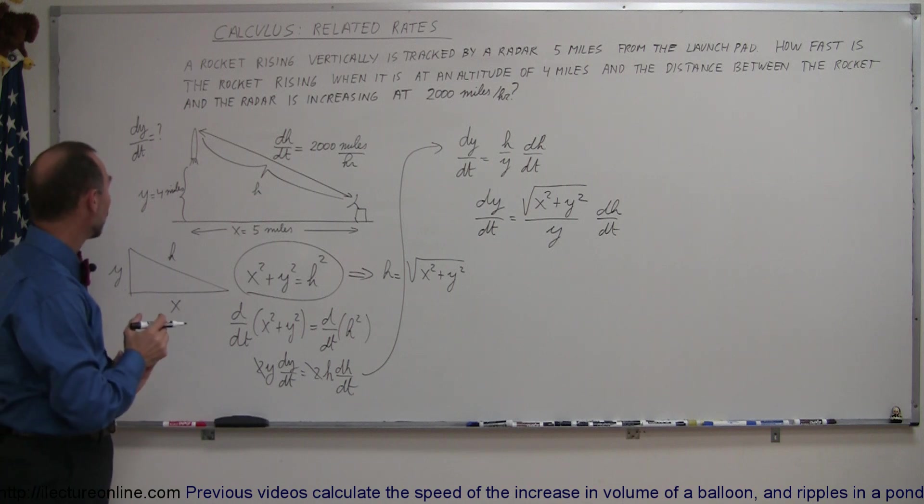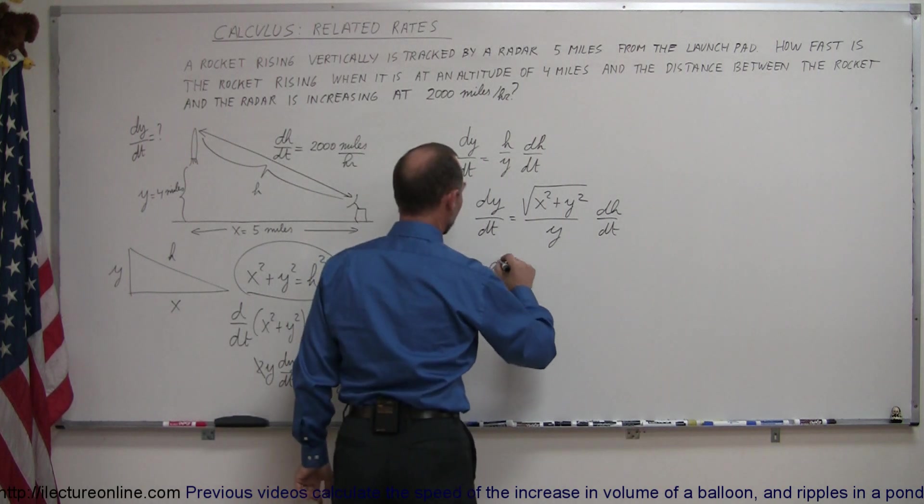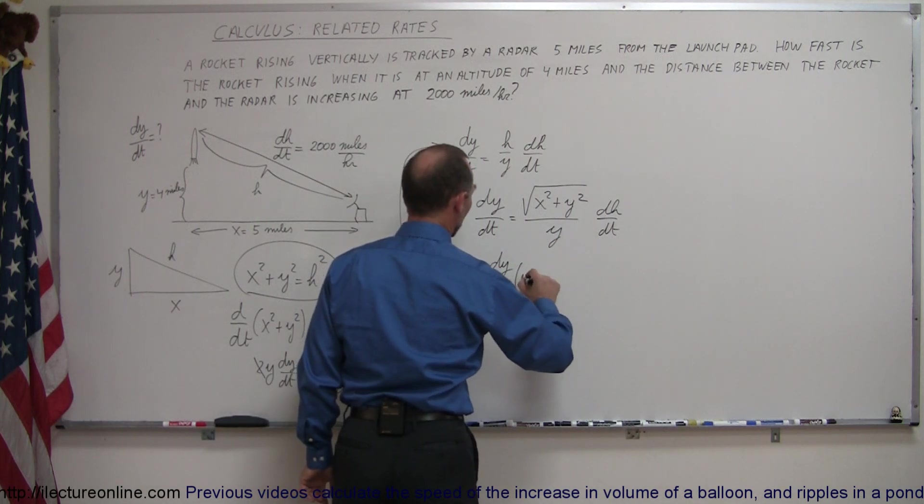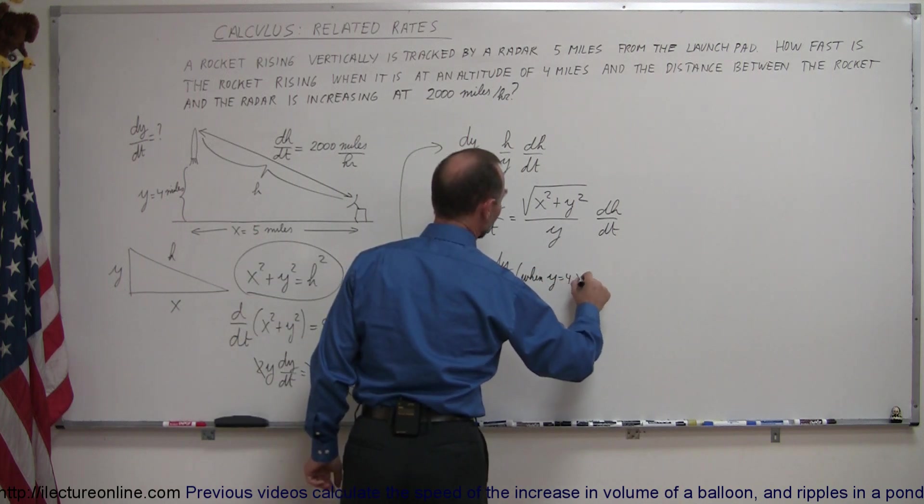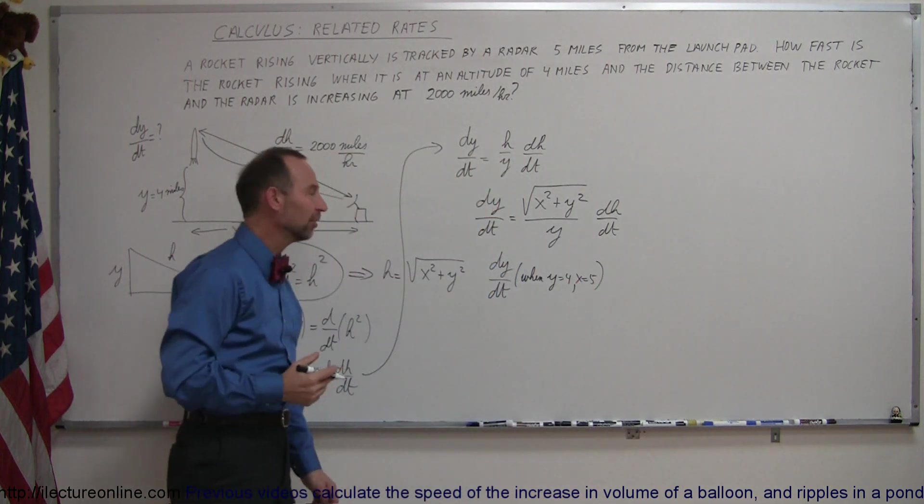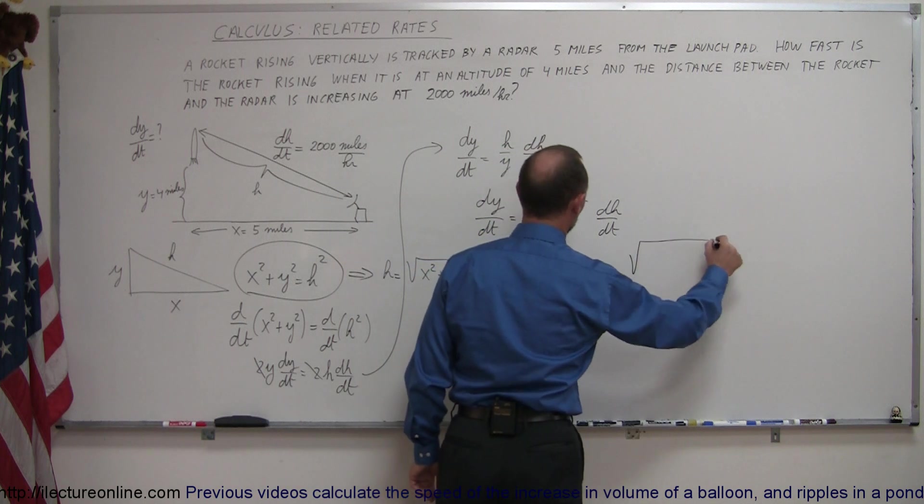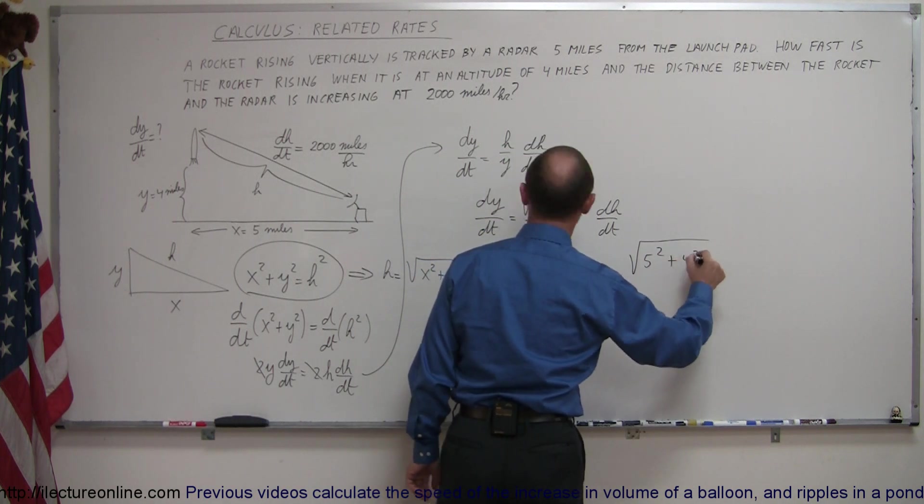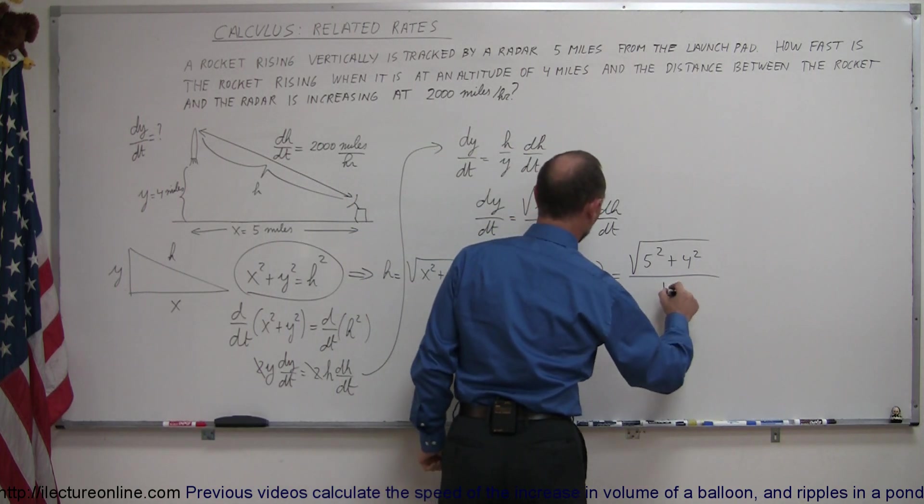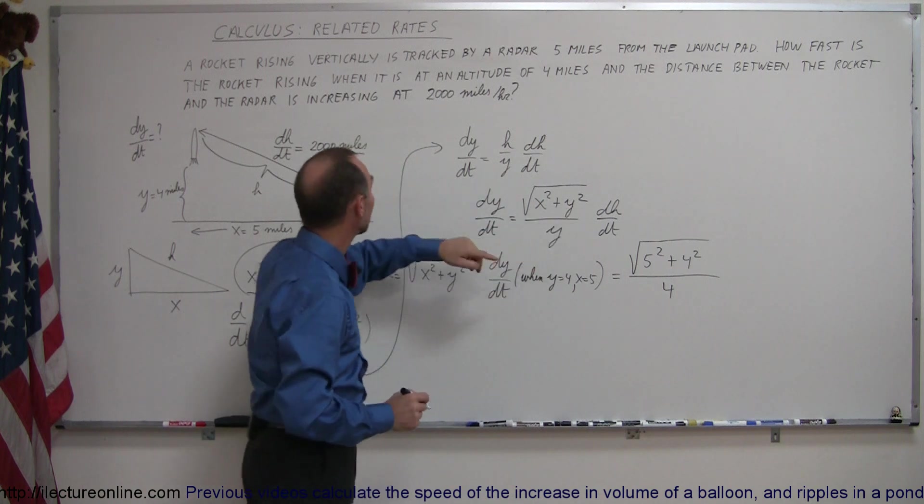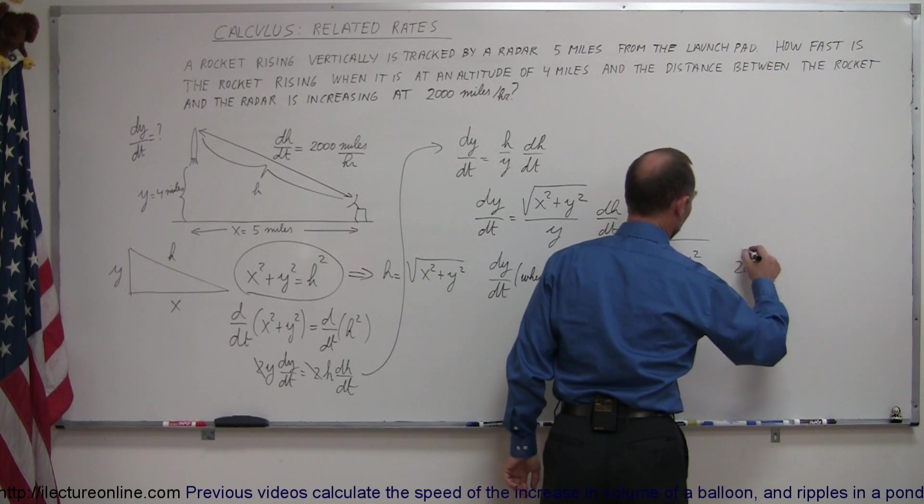That enables us now to find out what dy dt is. Because now we're going to solve for dy dt when y is 4 and x is 5. So we have dy dt when y is 4 and x equals 5. Of course, x equals 5 is a constant. So that's never going to change, but let's plug in those values. So this is equal to the square root of 5 squared plus 4 squared because we want to know what dy dt is when y is equal to 4 divided by y, which is 4. And then we multiply it times dh dt, which is given to us as 2,000 miles per hour. So that's 2,000, like so.